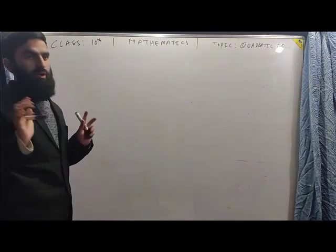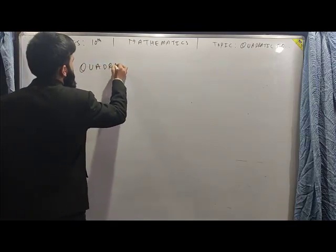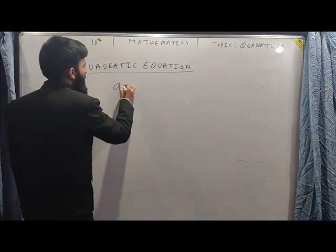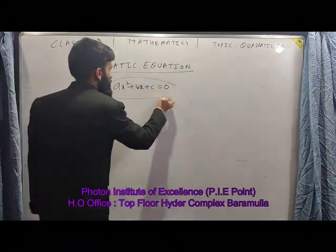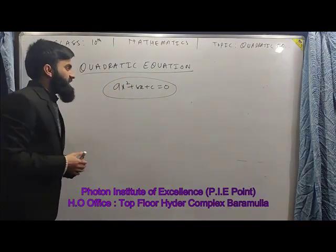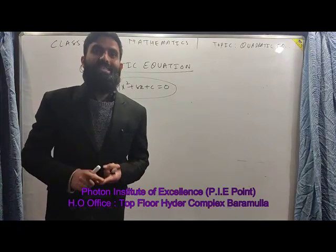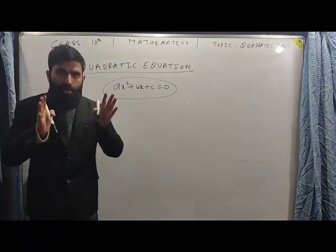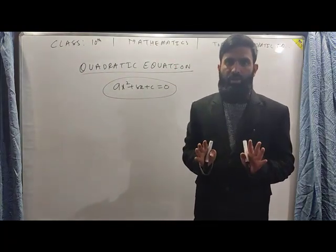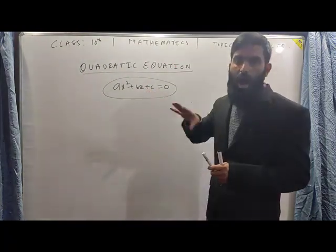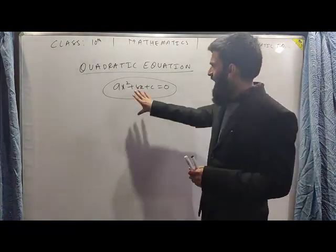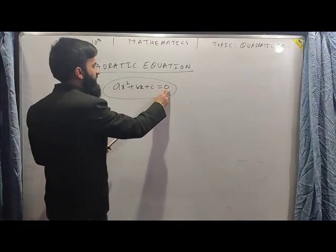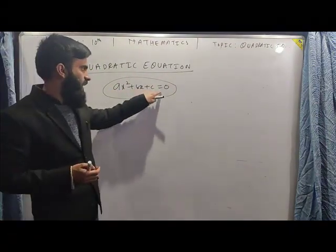Now, what is a quadratic equation? The general form of a quadratic equation is ax² plus bx plus c equals zero. An equation whose degree is 1 is called a linear equation, degree 2 is a quadratic equation, degree 3 is a cubic equation, and degree 4 is a biquadratic equation. This is a quadratic equation because it has equality between two statements and its degree is 2.